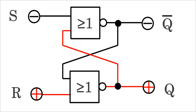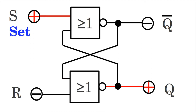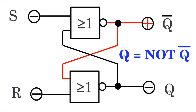If R is connected to high while S is held low, Q changes from high to low, forcing the upper gate to change from low to high via the cross-coupled input. During hold state, there is no change of the output state. Input S is called Set, bringing output Q to high, while input R is called Reset, bringing Q to low. Output Q is the complement of Q-bar; Q is not Q-bar.